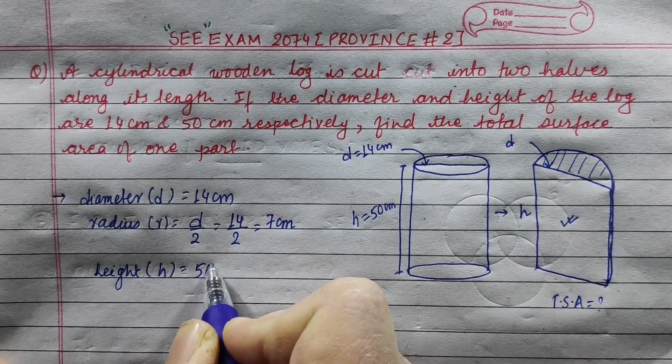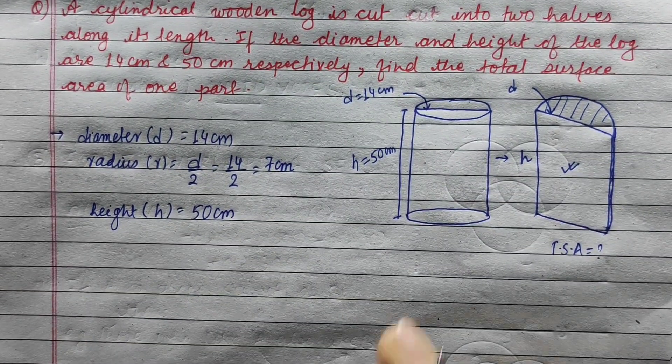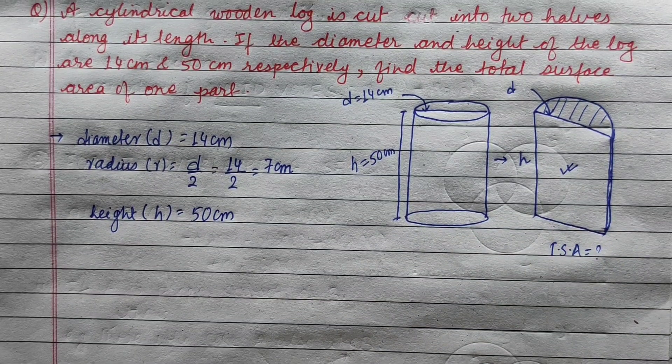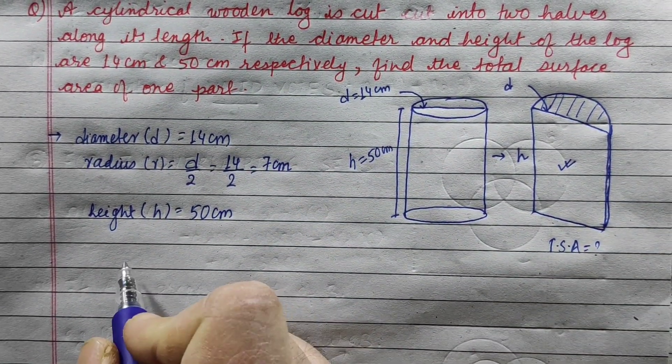Height is 50 cm. Now, let's take one half part. Let's look at one part of the log. This is TSA.